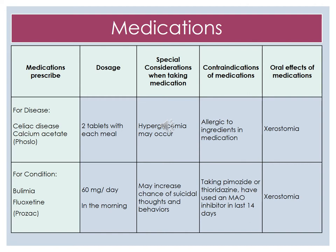An oral effect of this medication is xerostomia. For her condition of bulimia, she is taking Prozac at 60 milligrams a day in the morning. This may increase suicidal thoughts and behaviors. Contraindications for this medication include taking pimozide or thioridazine and having used a MAO inhibitor in the last 14 days. An oral effect of this medication is also xerostomia.